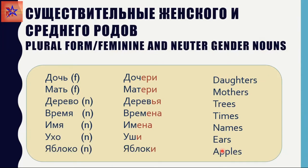Now let's turn to the feminine and neuter gender nouns — they are much less frequent than the masculine irregular forms. Дочь becomes Дочери — you just add ЕРИ. Мать becomes Матери. Дерево in the plural form is Деревья. Время becomes Времена, and Имя would be Имена. Be careful with the stress — you see it changes when the nouns become plural.